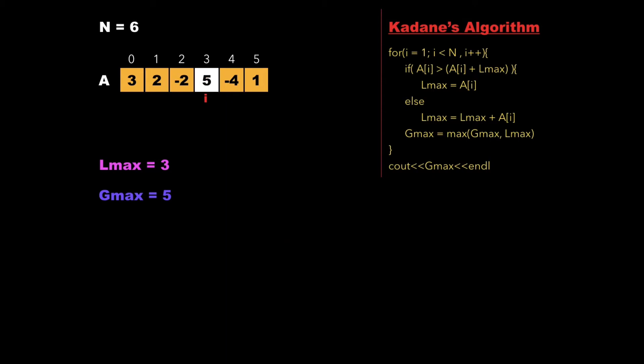Now i points to the value 5 and we check whether 5 is greater than 5 + lmax, that is whether 5 is greater than 8. Since 5 is less than 8, we again update lmax as lmax + a[i], so the updated lmax is 8. Since local max is greater than global max, we also update gmax to 8 and increment i.